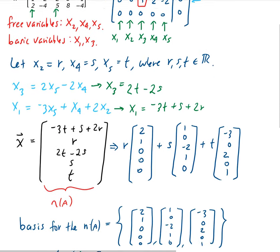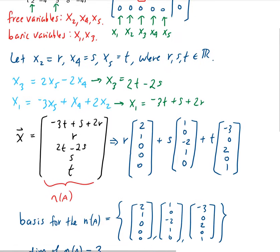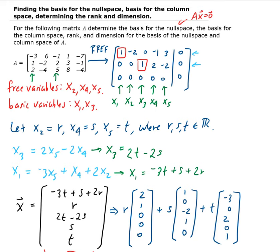The rank is basically just the number of pivots. In this case there are two pivots, so the rank of A is two. One thing to remember is that the dimension of the null space and the dimension of the column space add up to give you the number of columns of A. This makes sense because the dimension of the null space is the number of free variables, and the dimension of the column space is the number of basic variables. We had three free variables and two basic variables, which gives a total of five — corresponding to the number of columns of A.